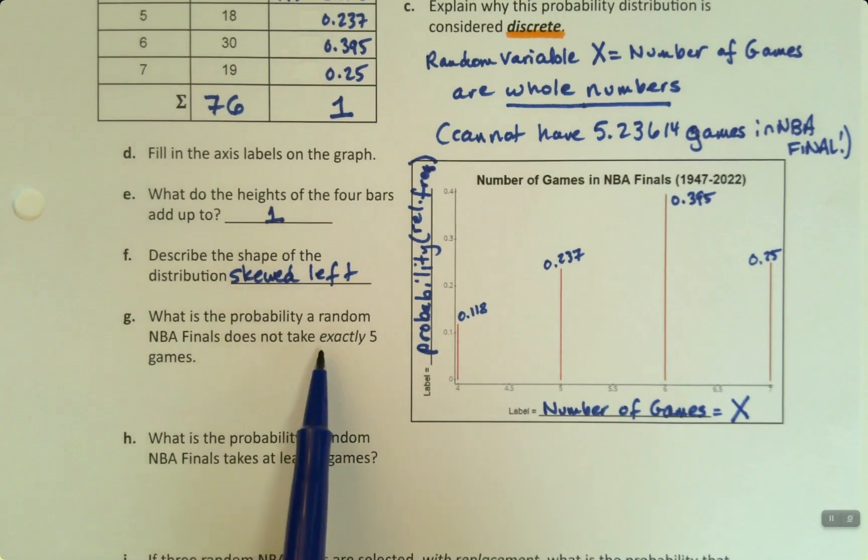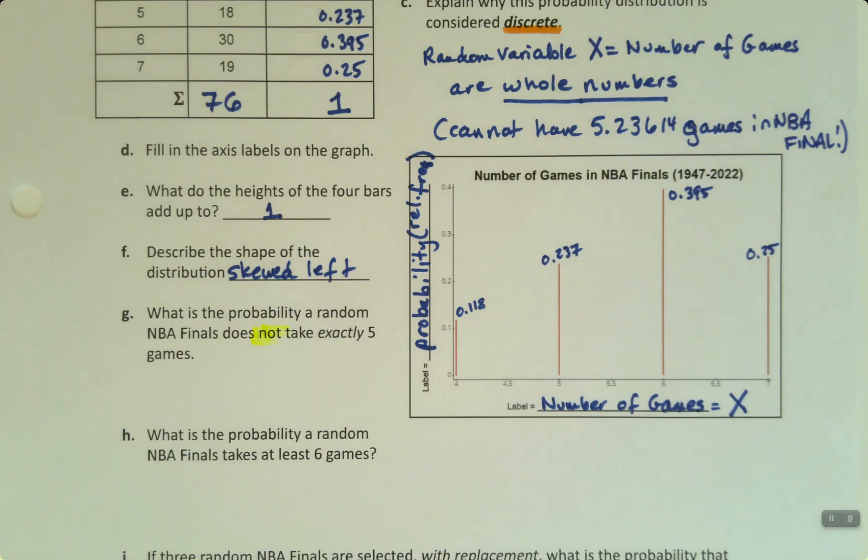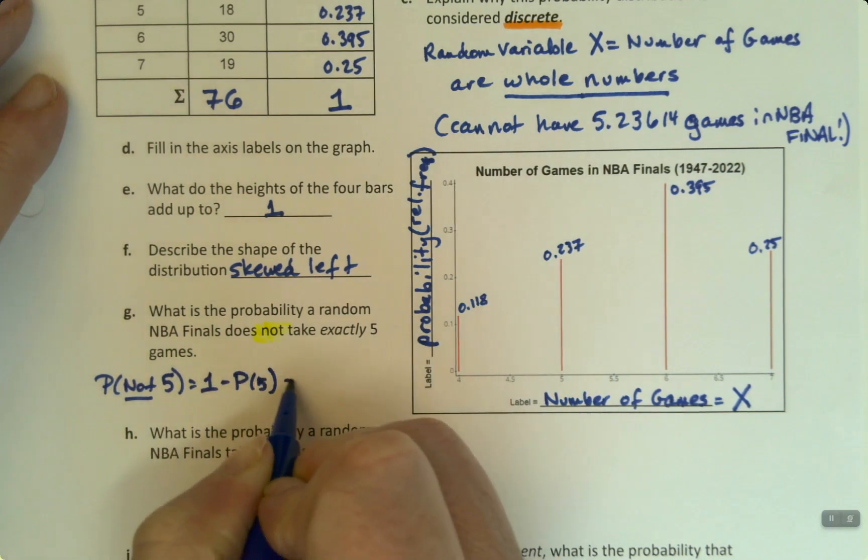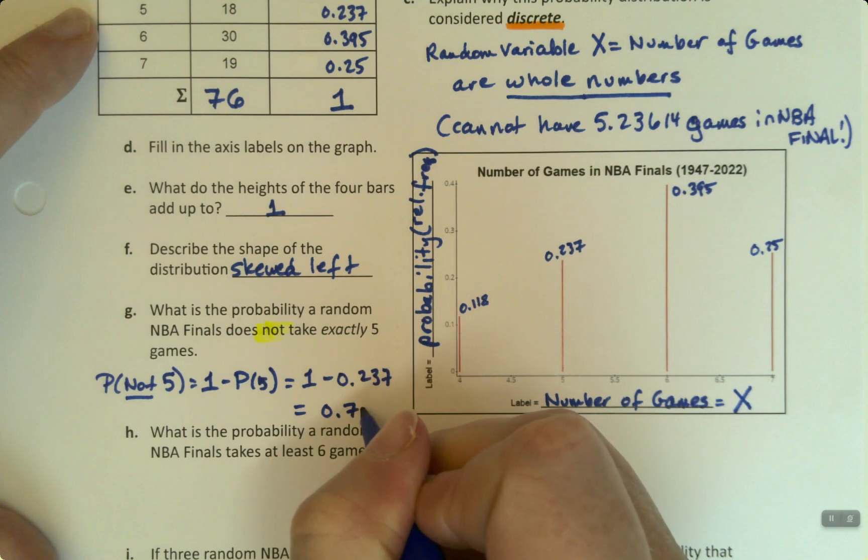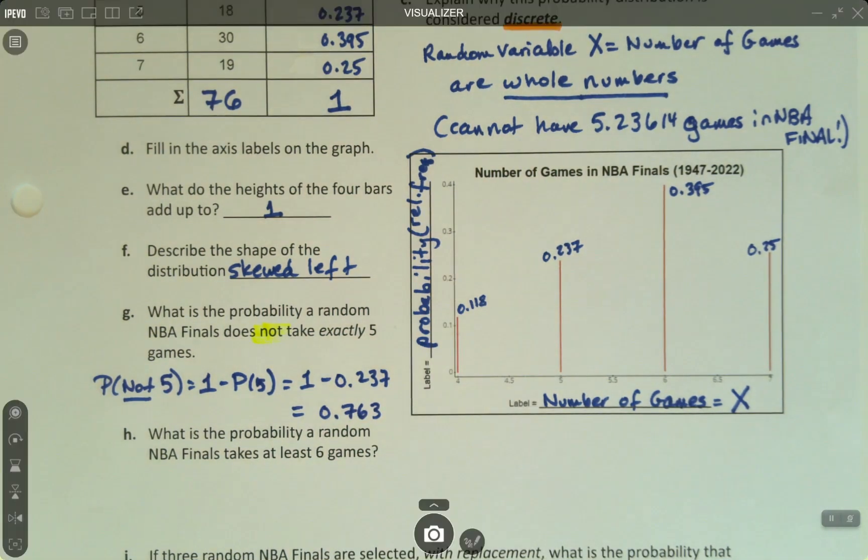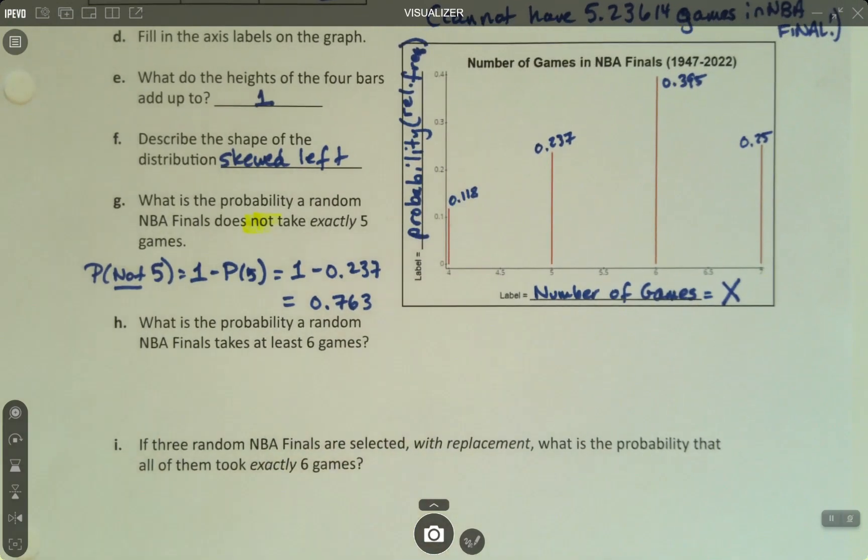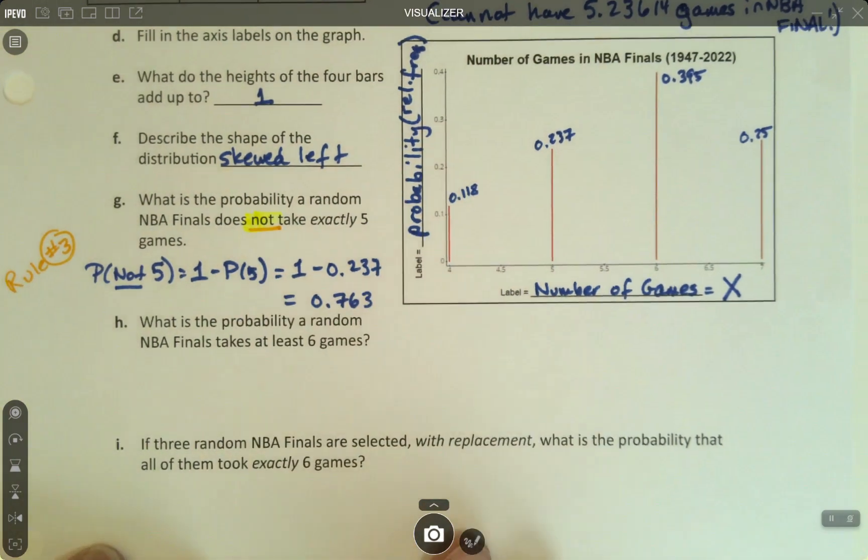What is the probability a random NBA Finals does not take exactly five games? We've got to remember our rules from Chapter 5. We want it to not take exactly five games. So I want the probability of not five. That's one minus the probability of five, which is one minus 0.237. This is 0.763. I'm using the complement rule, rule number three, because it's a not problem.